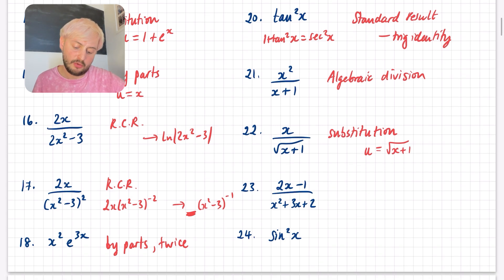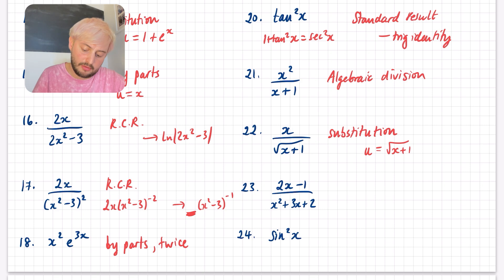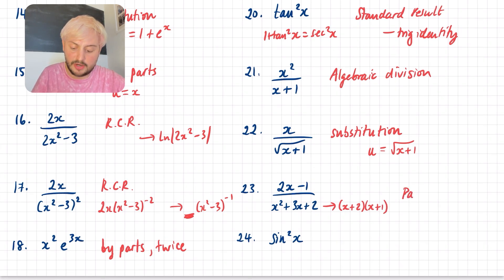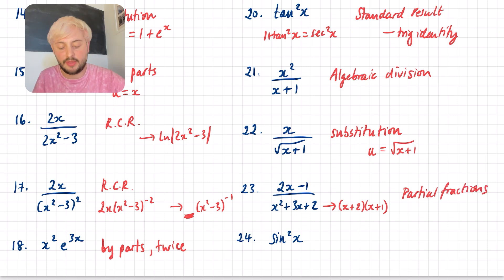Question 23: it definitely looks like it's going to be in the fractional section. I would spot something about this denominator — it factorises to (x + 2)(x + 1), which makes me think I should be doing partial fractions on this. So I would do partial fractions and then try to integrate those parts.